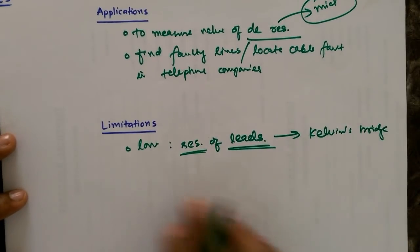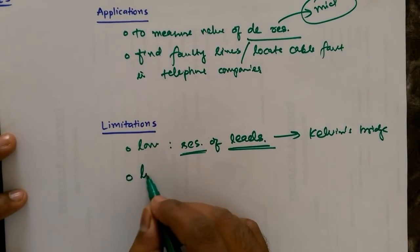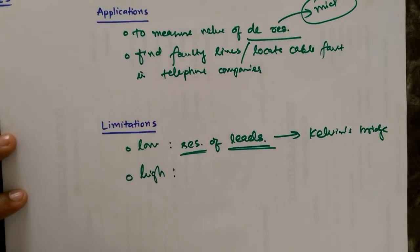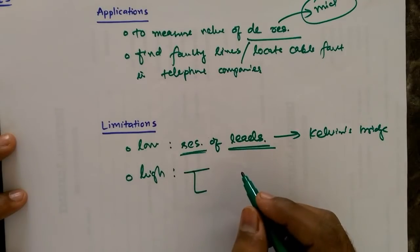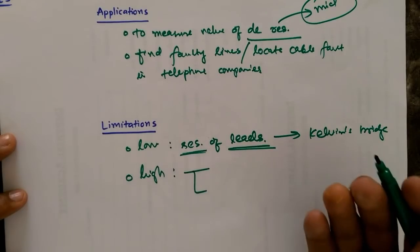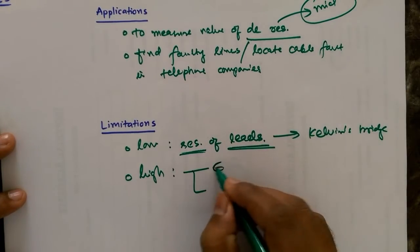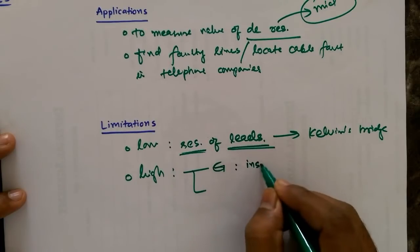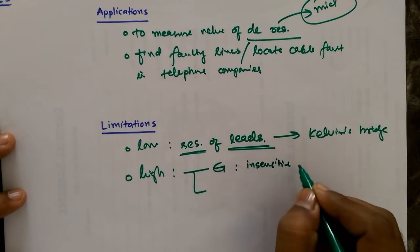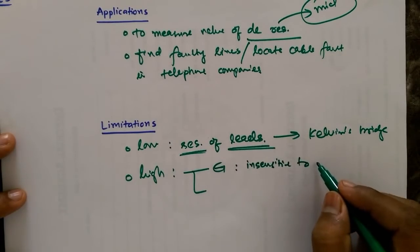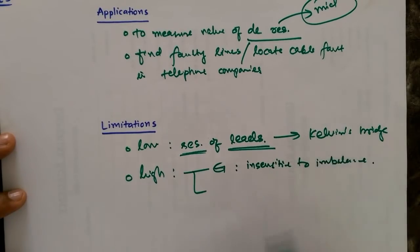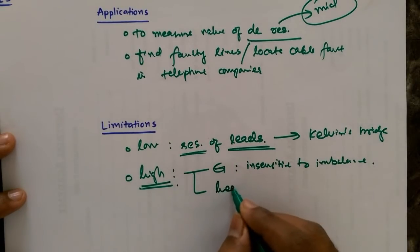Another limitation: if its value is too high, the resistance here you want to find out is too high, then there are two disadvantages. The first is the current will be too low because of high resistance, so your galvanometer, your current meter, will be insensitive to the imbalance. If your bridge is not balanced, then your deflection should be shown on meter, so it will not happen.